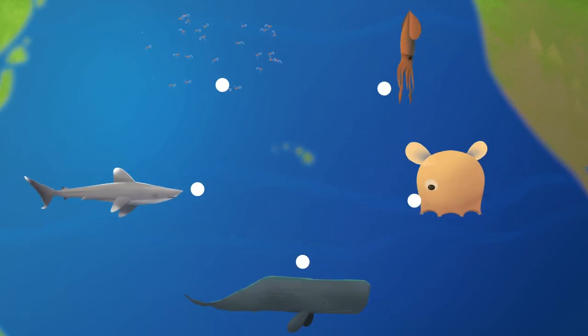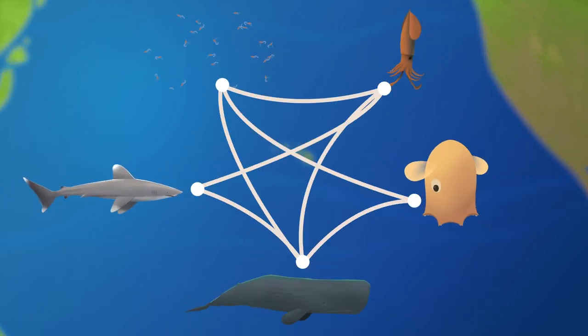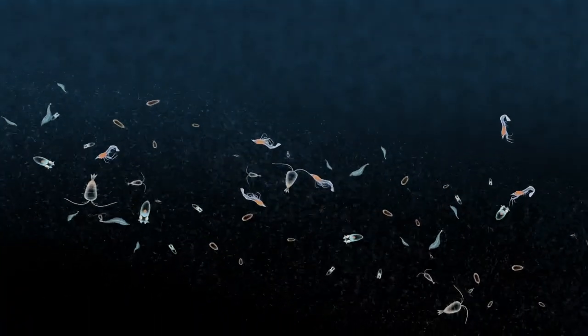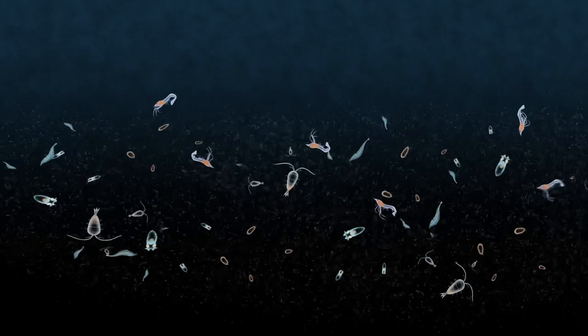Diel vertical migration is important for sustaining ocean food webs and speeding up nutrient and carbon cycling to the deep sea. This is just another way that tiny animals play a huge role in the ecology of our global ocean.